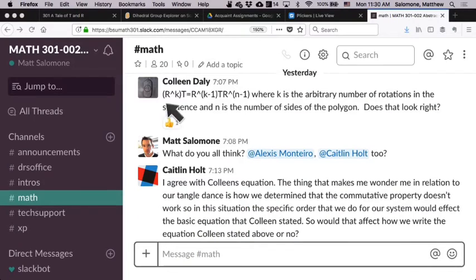So the conjecture is, if you rotate K times and then you reflect, that's the same thing as rotating one fewer time and then reflecting, and then continuing to rotate N minus 1 times, where N is the number of sides that the polygon has. So that was a conjecture.